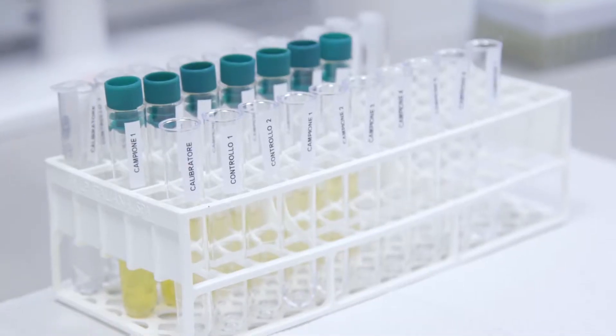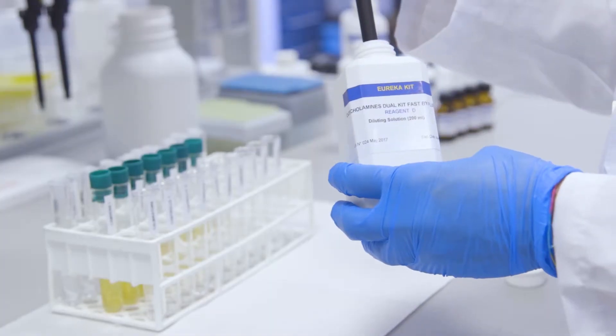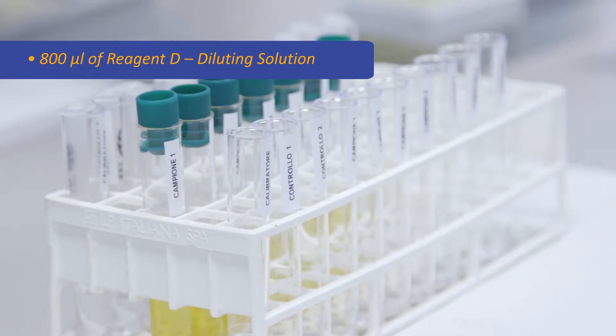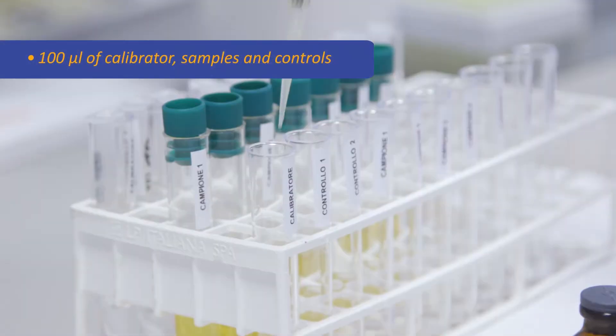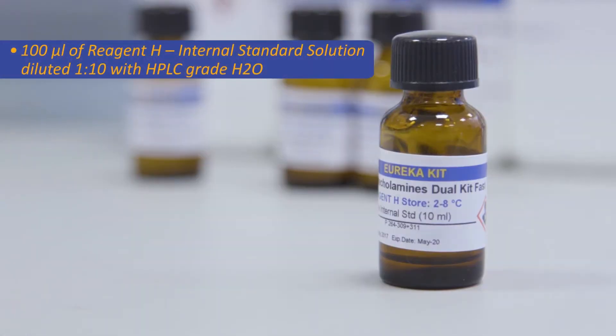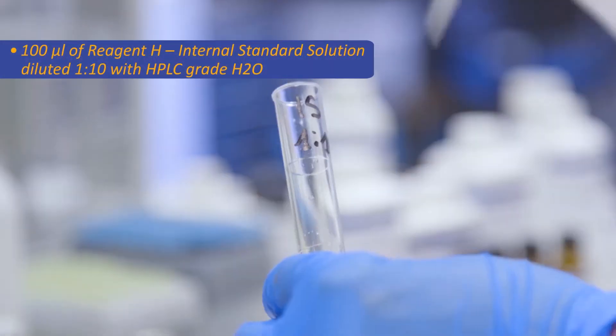Now we dispense in sequence in all the tubes: 800 microliters of reagent D diluting solution, 100 microliters of calibrator samples and controls, and 100 microliters of reagent H.